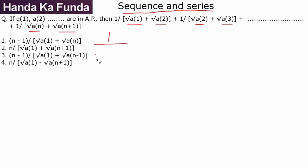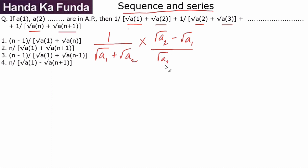The first term is 1/(√a1 + √a2). Using the concept of rationalization, we multiply numerator and denominator by (√a2 − √a1). The reason is that we do not want roots in the denominator — rationalizing makes it easier to add and cancel terms across the series.